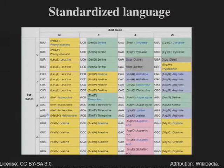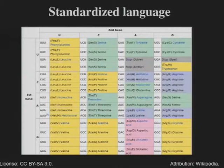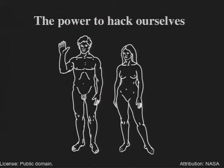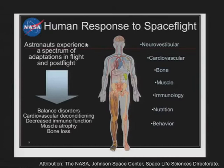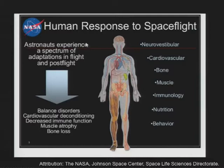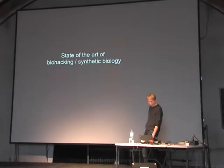DNA has a nice property: it has a standardized language, something we don't have in computer science. We have a genetic code composed of four letters and 20 different amino acids that these four letters can specify, and this is true for all biology. Biology gives us the power to hack ourselves — if we master biology, we'll be able to master the technology that built us. From a space angle, if we can hack ourselves, maybe we can solve problems NASA has identified with space travel: cardiovascular deconditioning, decreased immune function, bone loss — bad stuff we have to deal with if we want to stay in space long-term.